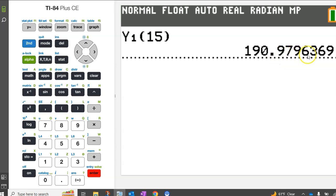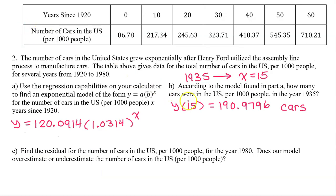190.9796. So that's 190.9796 cars per 1,000 people in the year 1935.